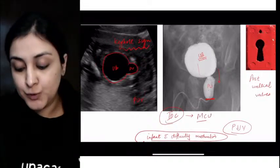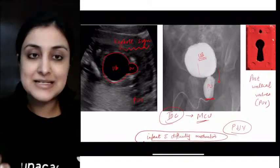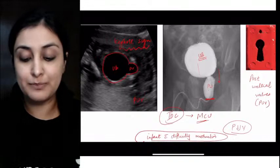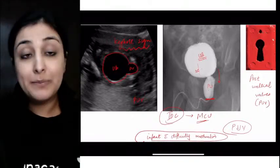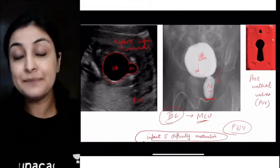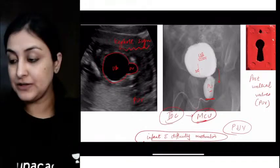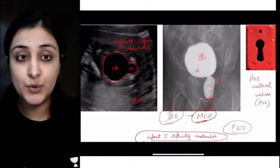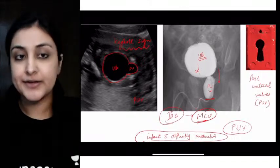What is the investigation of choice? We will do an MCU. Three letter condition, three letter investigation. Micturating cystourethrography. The baby will void and we will see the bladder is dilated, posterior urethra is dilated, but this anterior urethra is very narrow. This is what we see in posterior urethral valve. Keyhole sign on ultrasound, investigation of choice micturating cystourethrography.